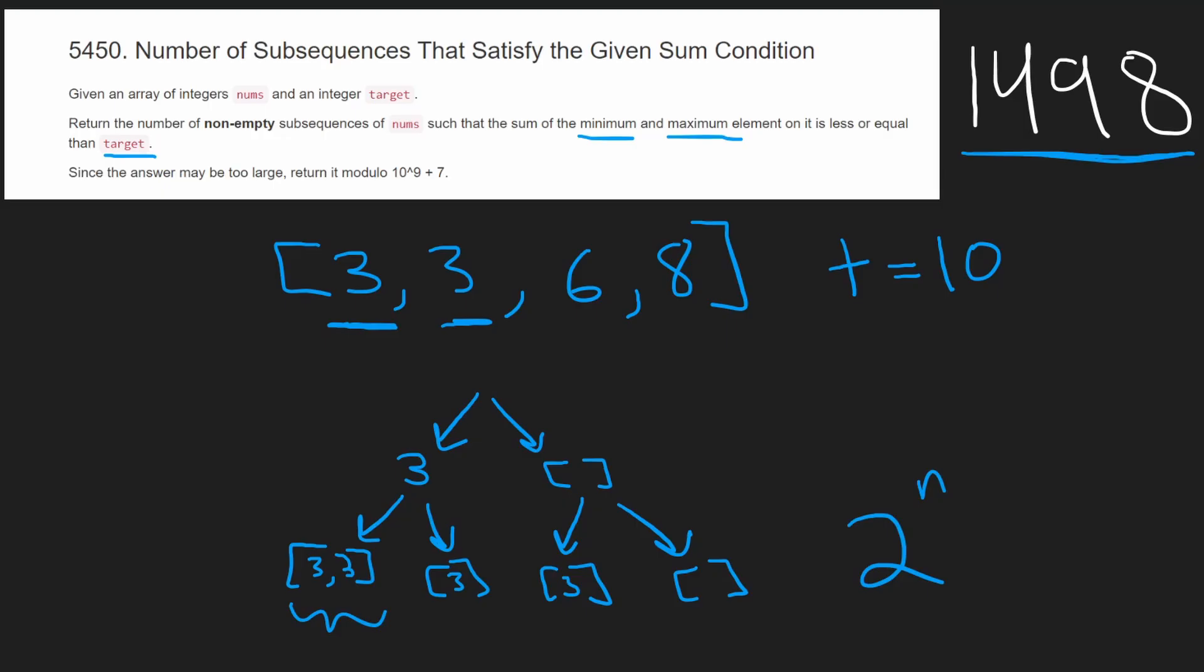Is there a pattern, or is there some information that we can extract to maybe be greedy in some type of way? There is. So in this problem, the target is always going to be positive, and the values in our input array are also always going to be positive. So the limiting factor is really how big is the maximum.